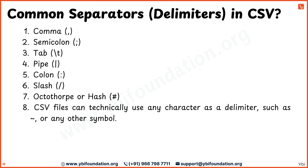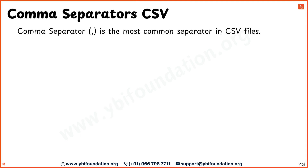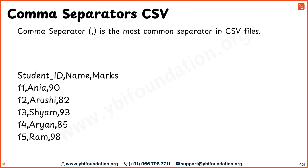The most common separator used in CSV files is the comma, which separates each value in a row. For example, each piece of information like student ID, name, and marks is separated by a comma. This format makes it easy to organize and import the data into different programs or tools.